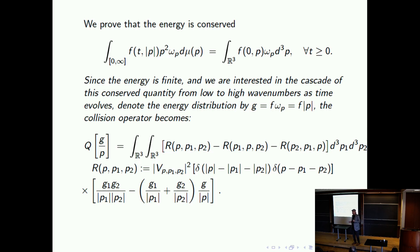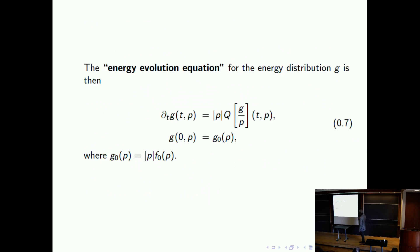We are only interested in the energy. The mass is not conserved in this problem. Since we are only interested in the dynamics of the energy, the natural thing is to rewrite the equation for the energy. We take g to be f times omega, which in this case is f times |p|. We write the collision terms for g. The collision term for g then takes a specific form, and we have an energy equation: d_t g = |p| · Q(g/|p|), with g at the initial condition given accordingly. That's the problem we would like to solve.